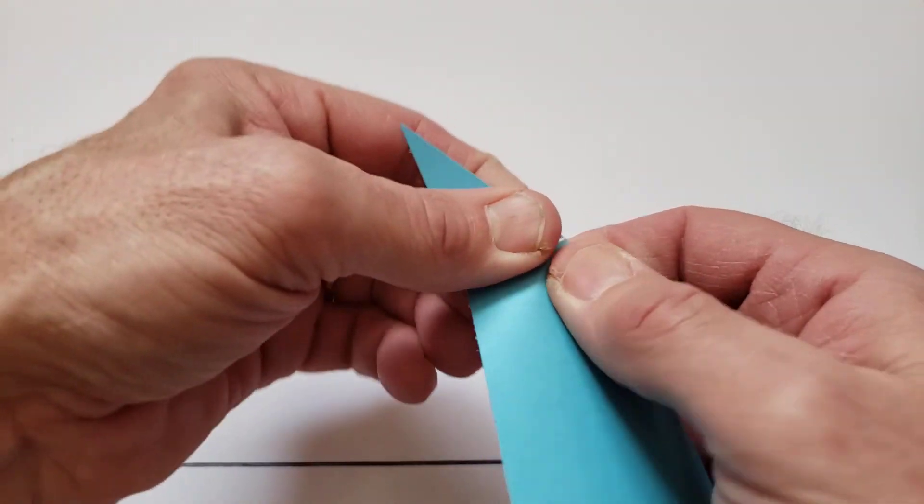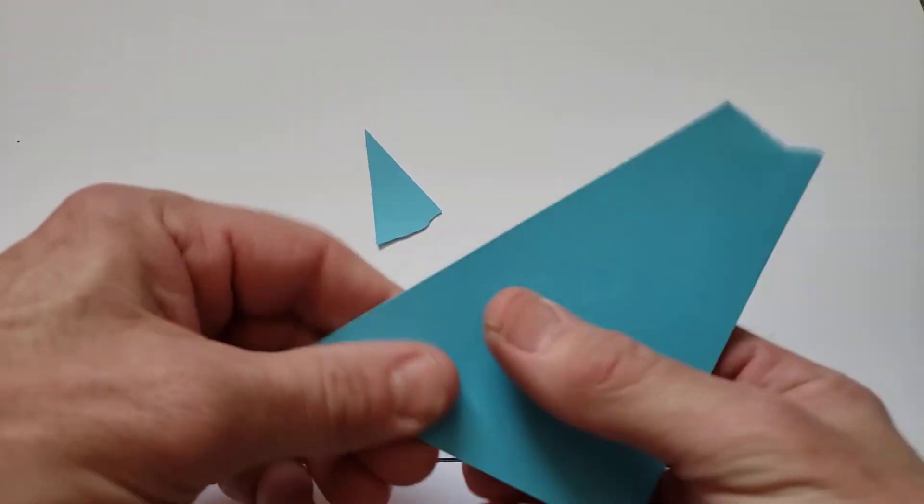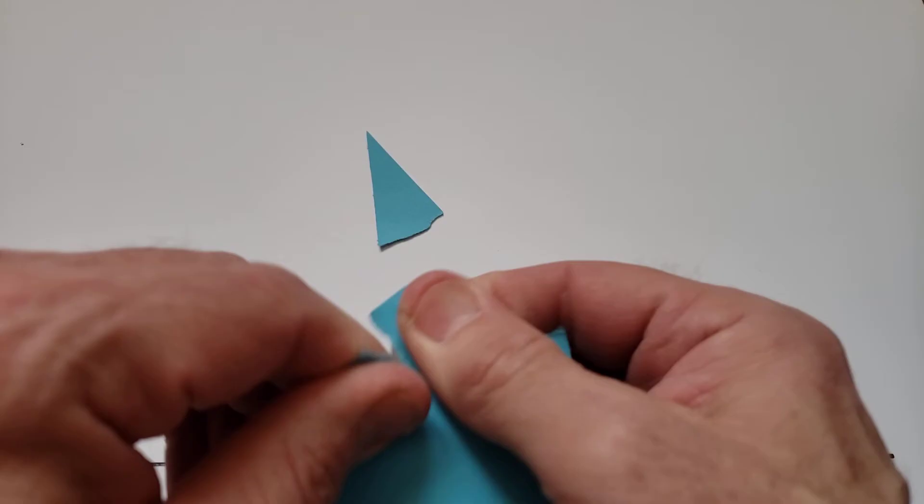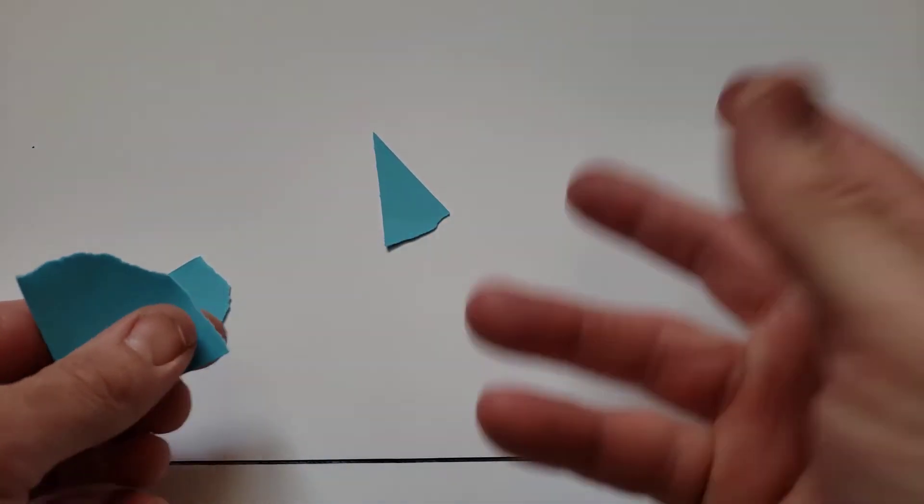What we're going to do is rip off the corners. The corners represent the three angles. Once you rip them off, you don't need that piece anymore.